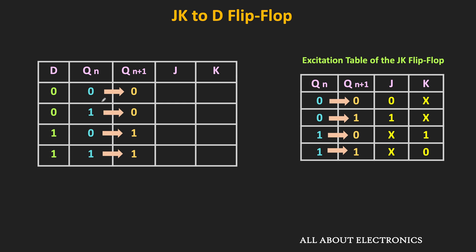From the excitation table of the JK flip-flop: for the 0-to-0 transition, J and K are 0 and X. For the 1-to-0 transition, J is X and K is 1. For the 0-to-1 transition, J is 1 and K is X. For the 1-to-1 transition, J is X and K is 0. In this way, we obtained the required J and K inputs for each transition.